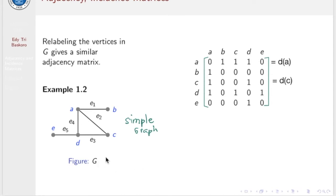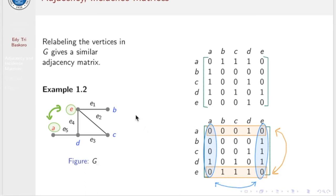Consider another example: a graph G with 5 vertices and 5 edges. This is a simple graph, and here is its adjacency matrix. If you exchange the labeling of the vertices — for instance, A and E — then the adjacency matrix of the graph with the new labeling is shown here. This matrix can be obtained from the original by exchanging rows A and E and columns A and E.